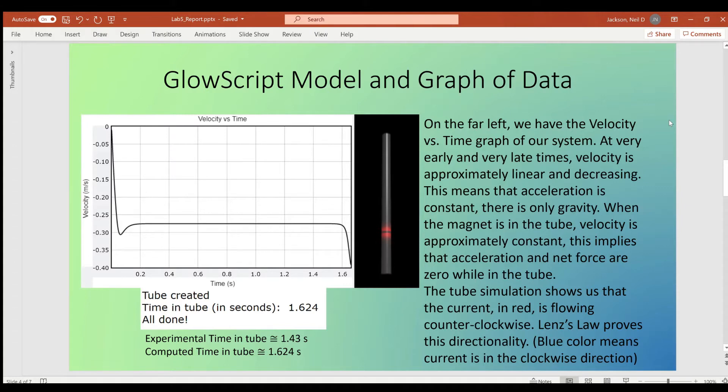However, when the magnet is in the tube, the velocity is constant, meaning that there is zero acceleration and a net force is zero, which implies constant velocity, which is supported by my graph. And then in this little tube diagram right here, you can see that the current modeled in red.